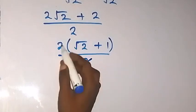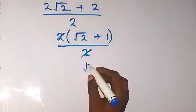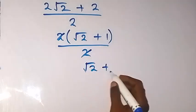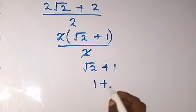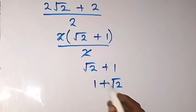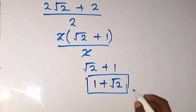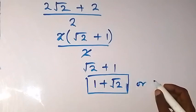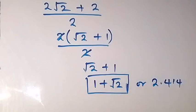The 2's cancel each other, and what we have is root 2 plus 1, which we can also write as 1 plus root 2. This is the solution to the problem, which we can also put in decimal form: approximately 2.414.